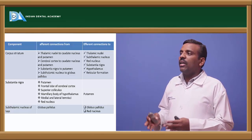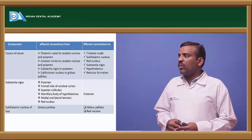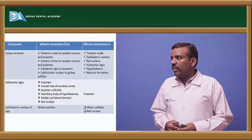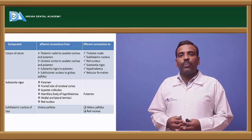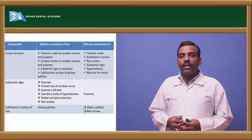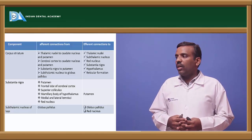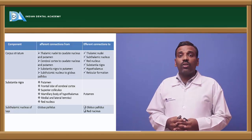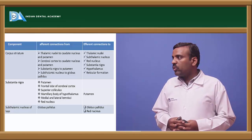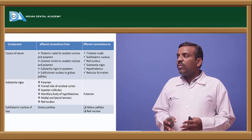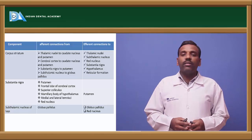Corpus striatum afferent connections come from thalamic nuclei, cerebellar cortex, substantia nigra, and subthalamic nuclei. Efferent connections go to substantia nigra, putamen, frontal lobe of cerebral cortex, superior colliculus, mammillary body, and red nucleus. Efferent connections from the globus pallidus go to thalamic nuclei, subthalamic nucleus, red nucleus, substantia nigra, hypothalamus, and reticular formation. Substantia nigra connects directly to the putamen, and the subthalamic nucleus connects to the globus pallidus and red nucleus.